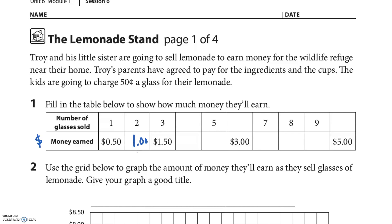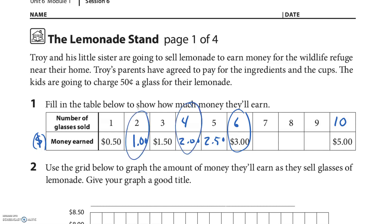That's $1 — I don't have to put the dollar sign every time because money earned is in dollars. Looking at the table: one, two, three, four, six, seven, eight, nine, and probably ten glasses. So: 50 cents, $1, $1.50, $2, $2.50, $3 — do you see a pattern? It's half of that number of glasses. That's $4, and let's go part way in between. I went really fast — I hope you paused it if you thought you were getting it.